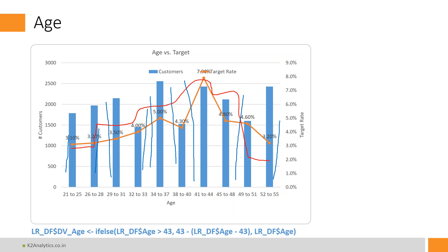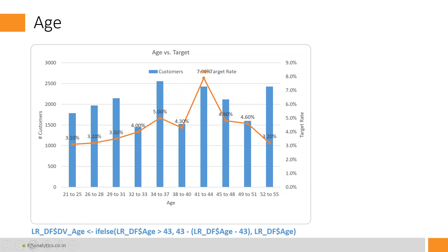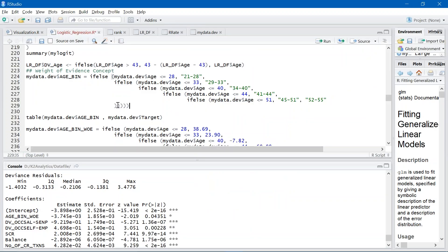However, the most common approach which many companies now follow to handle these kinds of variables is called the weight of evidence concept. Let me explain how we can apply the weight of evidence concept on the age variable in our model. We would have done binning — bin one, bin two, bin three, bin four, bin five, bin six. Binning, slabbing, bucketing — these terminologies are used interchangeably. We would typically write an if-else logic to create these bins.